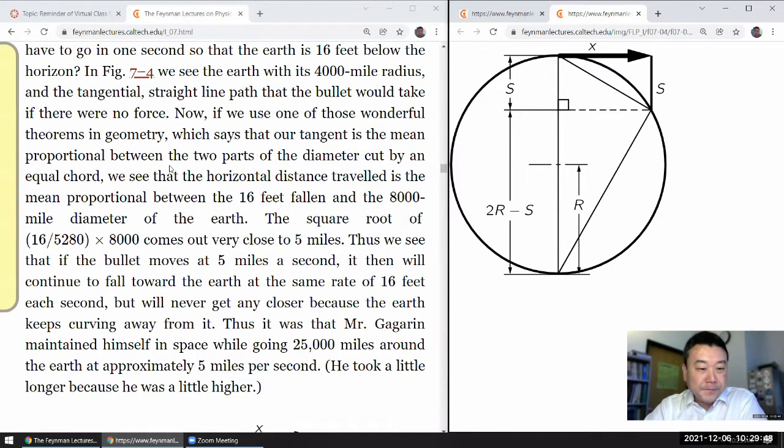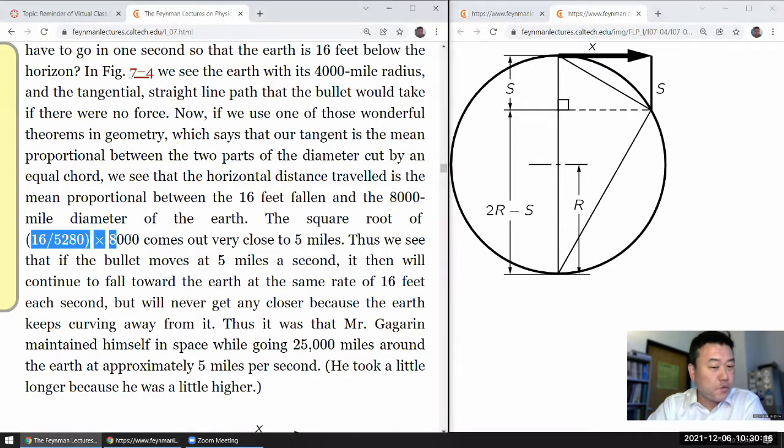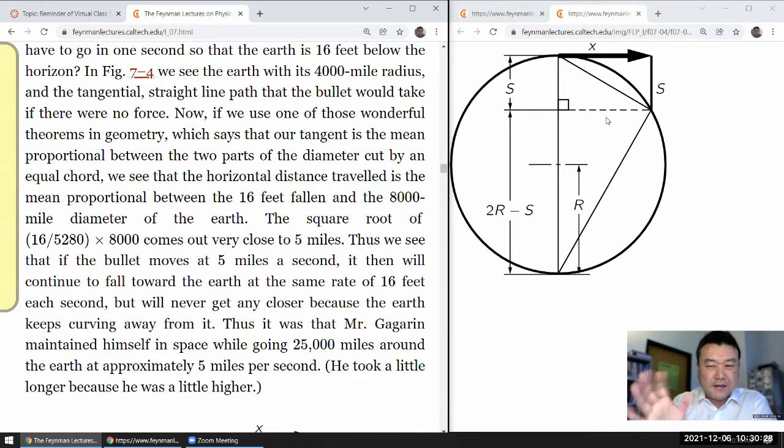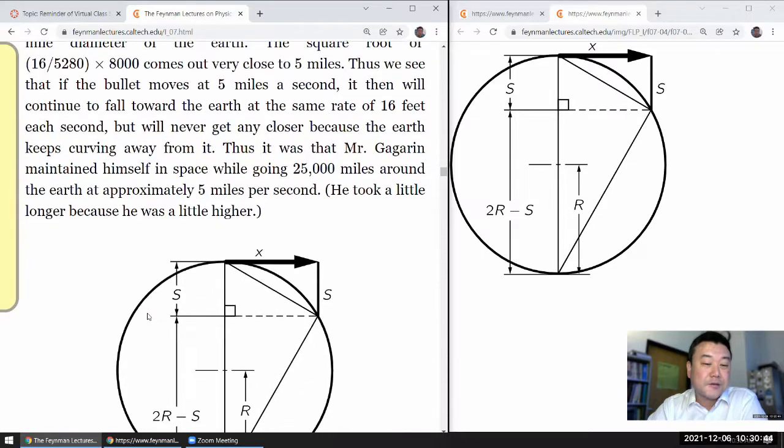So what I'm saying here is that we see the mean proportional between the 16 feet fallen and the 8,000-mile diameter of the Earth. The square root of this quantity, which is how you calculate geometric mean, comes out very close to 5 miles. I'm pretty sure this drawing should be drawn a little differently, but in the end, it doesn't matter all that much for these small distances. If the bullet moves at 5 miles a second, it then will continue to fall toward the Earth at the same rate of 16 feet each second, but will never get any closer because the Earth keeps curving away from it.